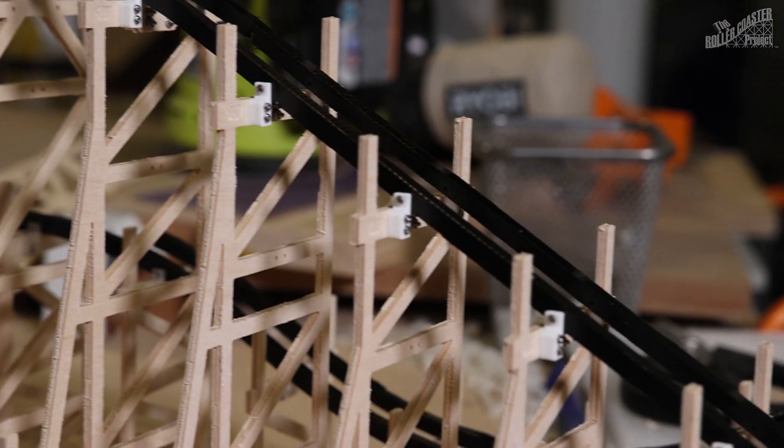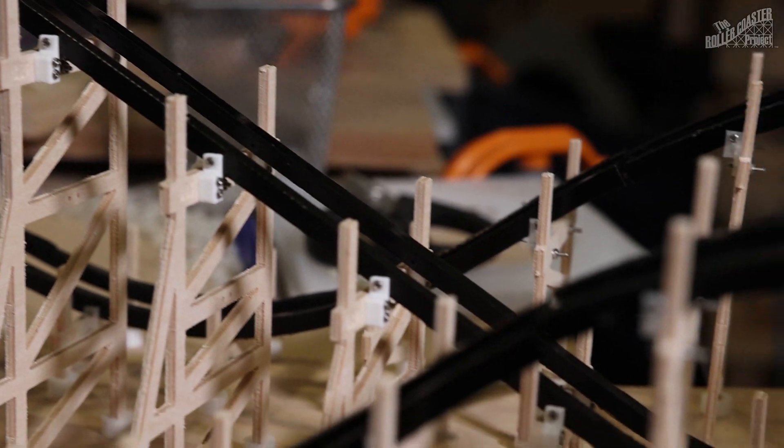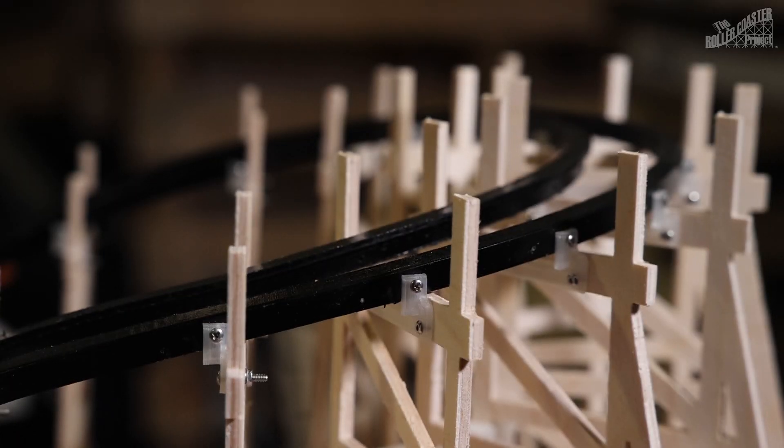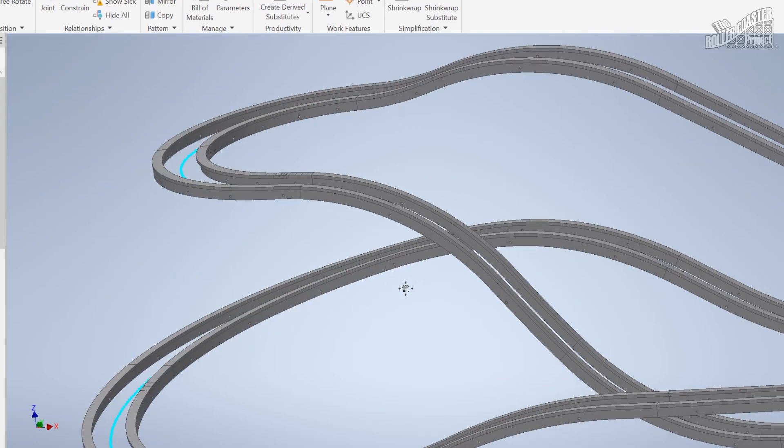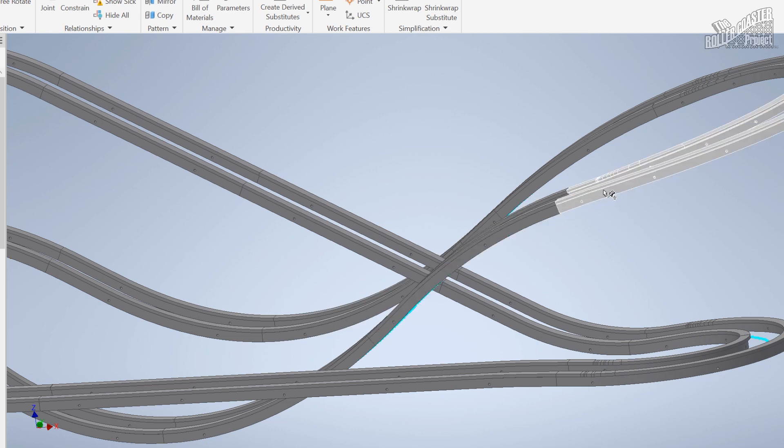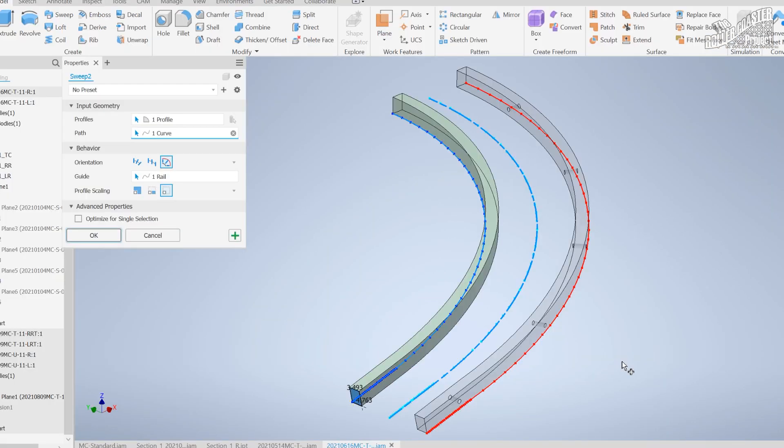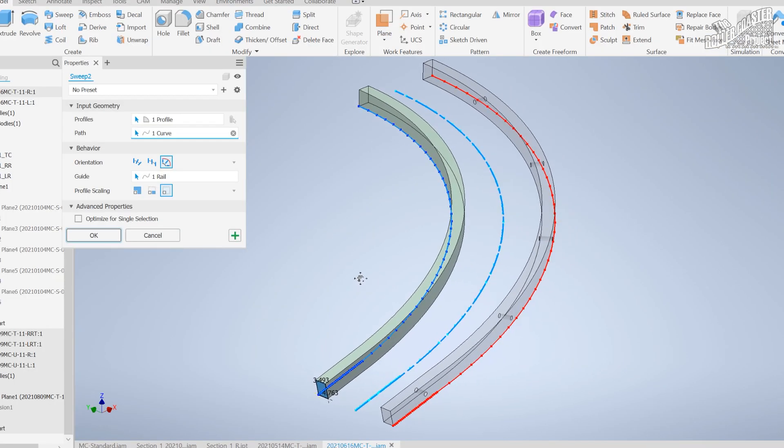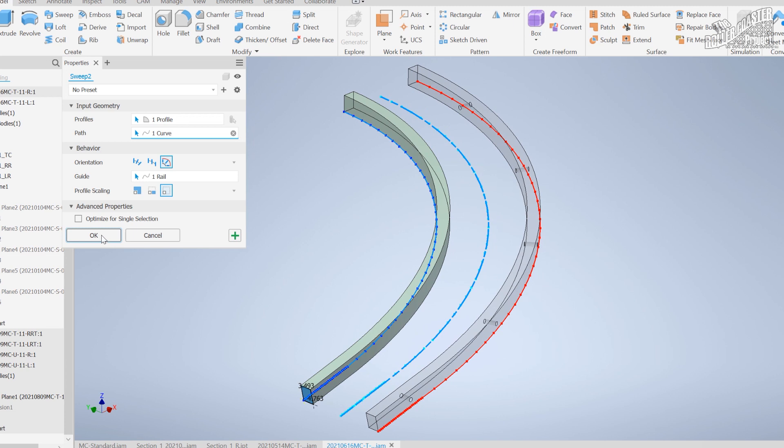With all of the ride sections imported, I broke up the massive curves into defined ride track sections, trying to keep everything 6 inches in length. Originally there were 23 track sections for the ride, and each section has a right and left rail. With each section defined, I implemented the sweep and loft features in Inventor to produce the track rails.